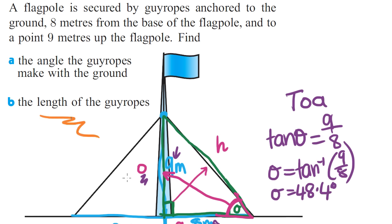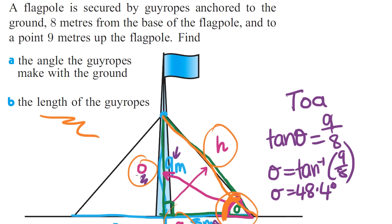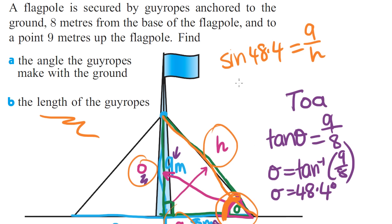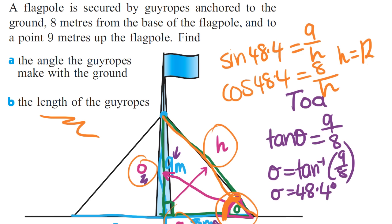For part B, find the length of the guy ropes — the hypotenuse. Using the angle we just found (48.4 degrees) and either the opposite or adjacent: sine of 48.4 equals 9 over H, or cosine of 48.4 equals 8 over H. Either way, rearranging gives H equals 12 metres.